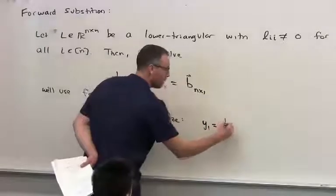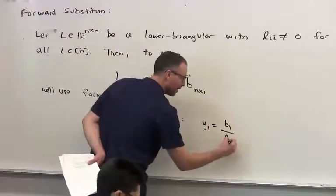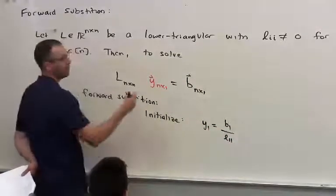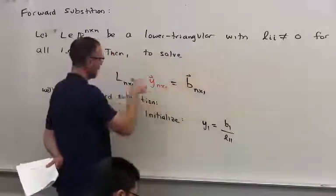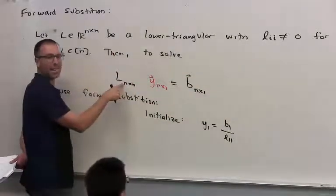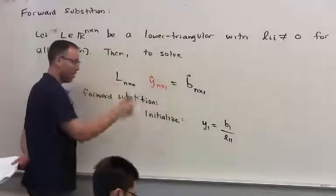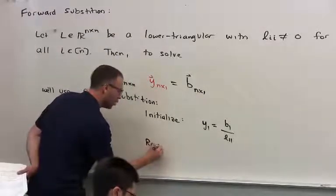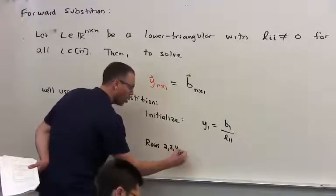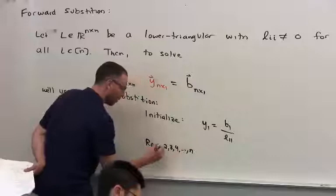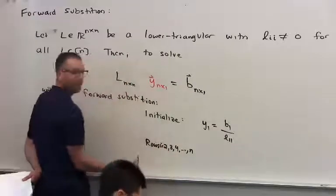Well, Y1 would be B1 divided by whatever the right-hand side, the first entry of that right-hand side, divided by the main diagonal entry in row 1. And then when we talk about rows 2, 3, 4, all the way up to N, and perhaps we call that I.